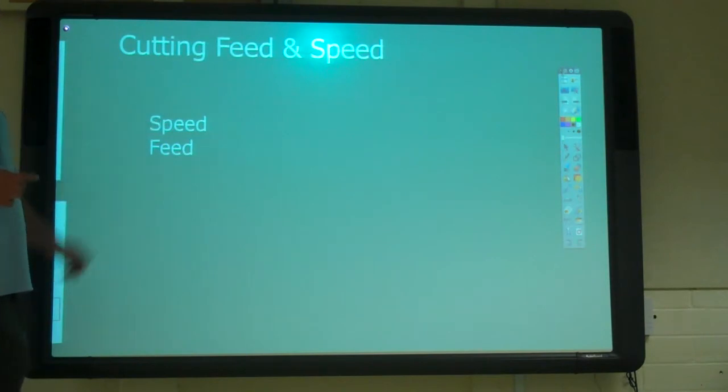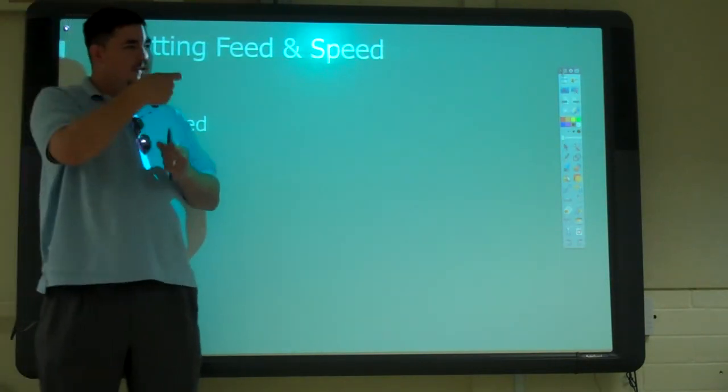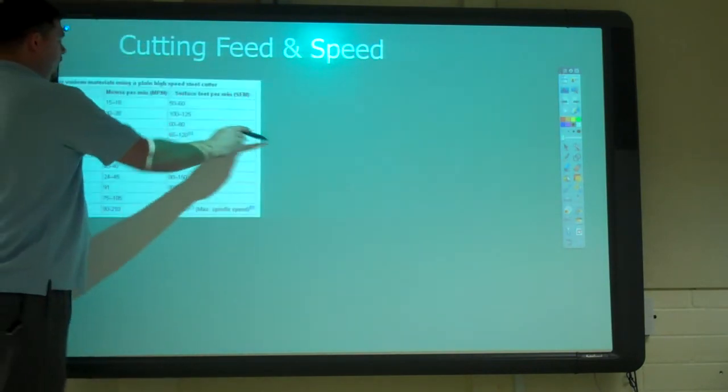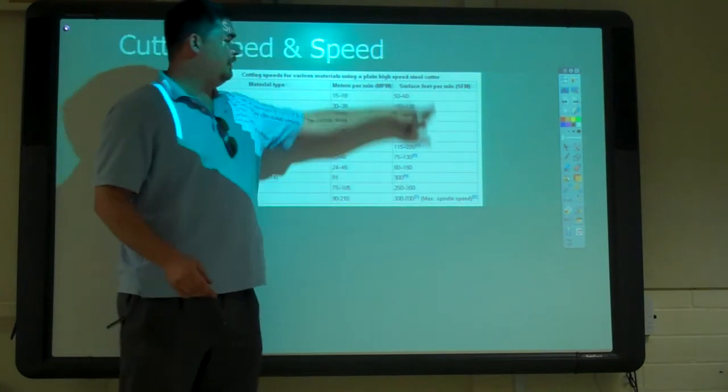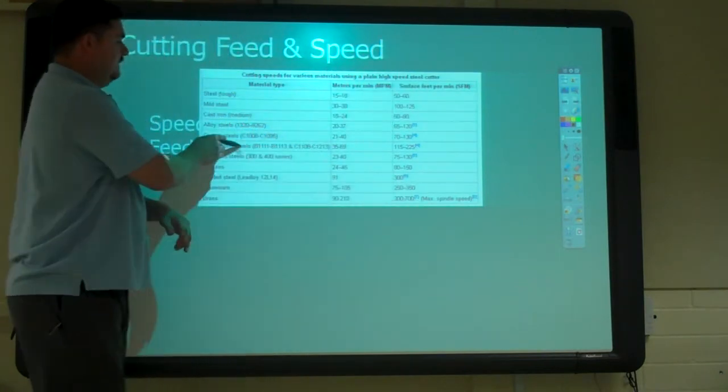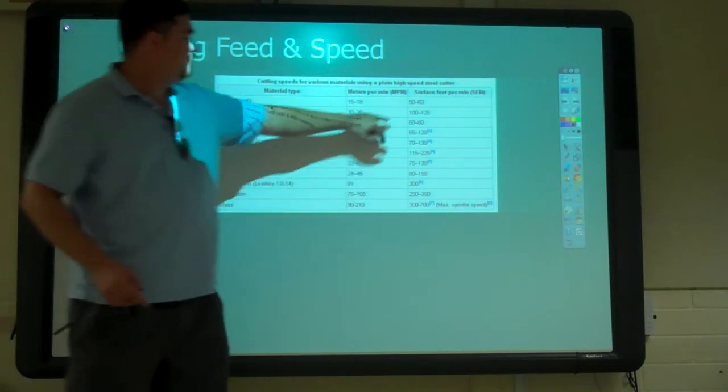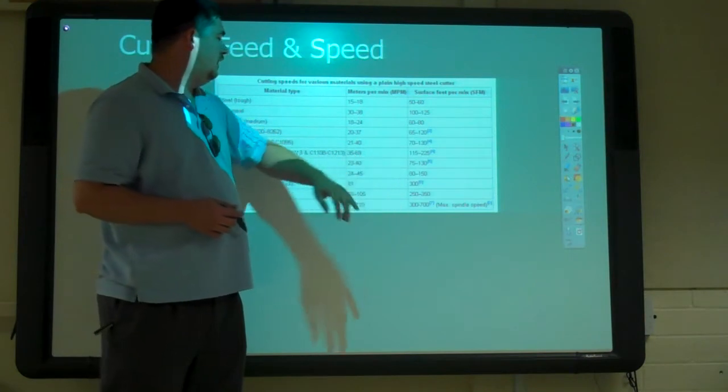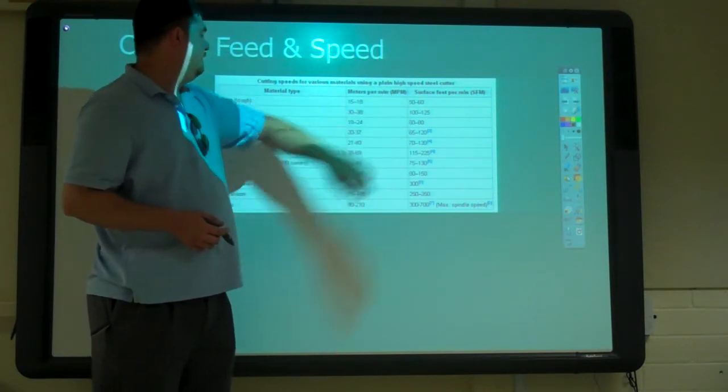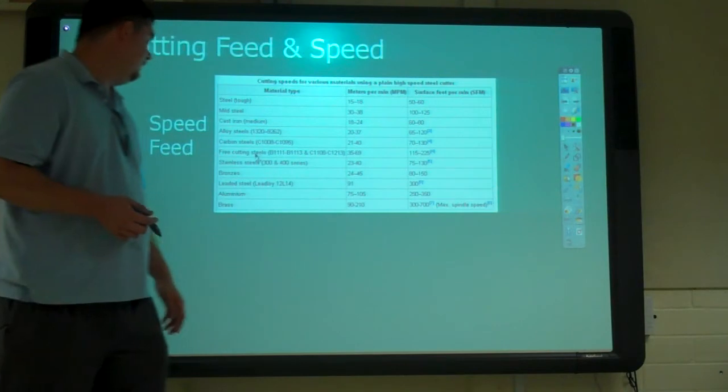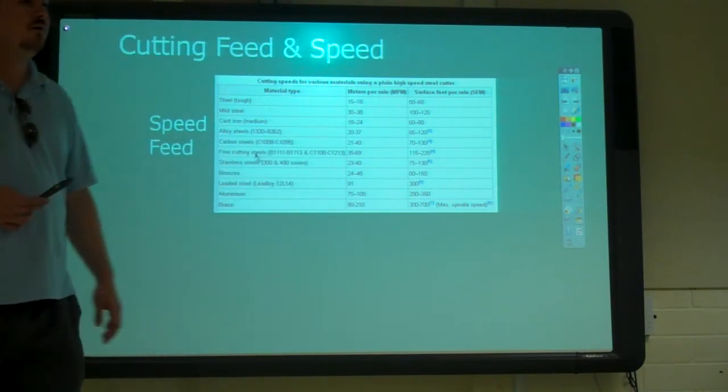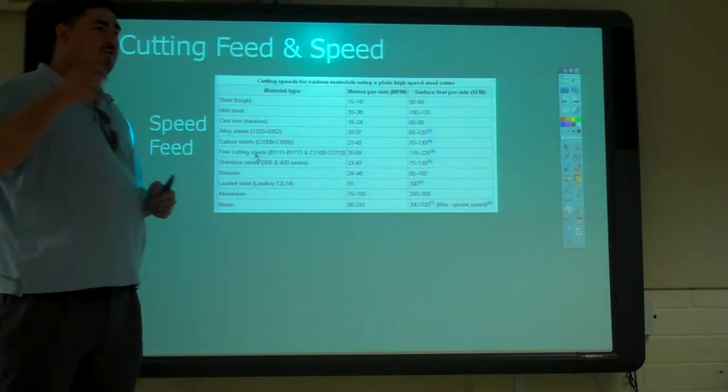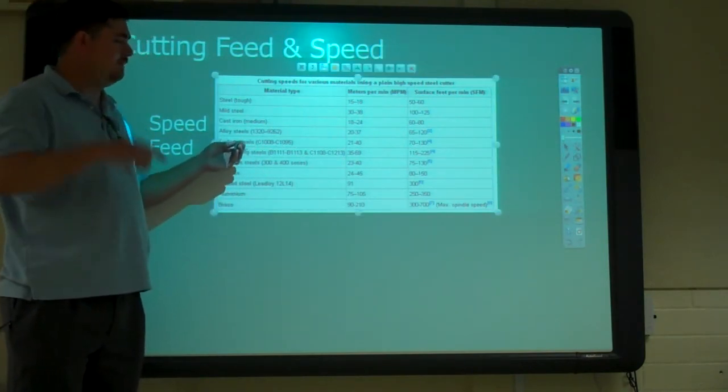So the speed, that's how fast the cutting, whatever's doing the cutting, is touching the material. And so those can be done in surface feet per minute, is usually what we call it. And so based on the material type, they have different recommended speeds. Starting at like 50 for steel and up to 350 for aluminum, 800 for brass. It's kind of the softer material, the less it's going to resist, the faster you can go through it.